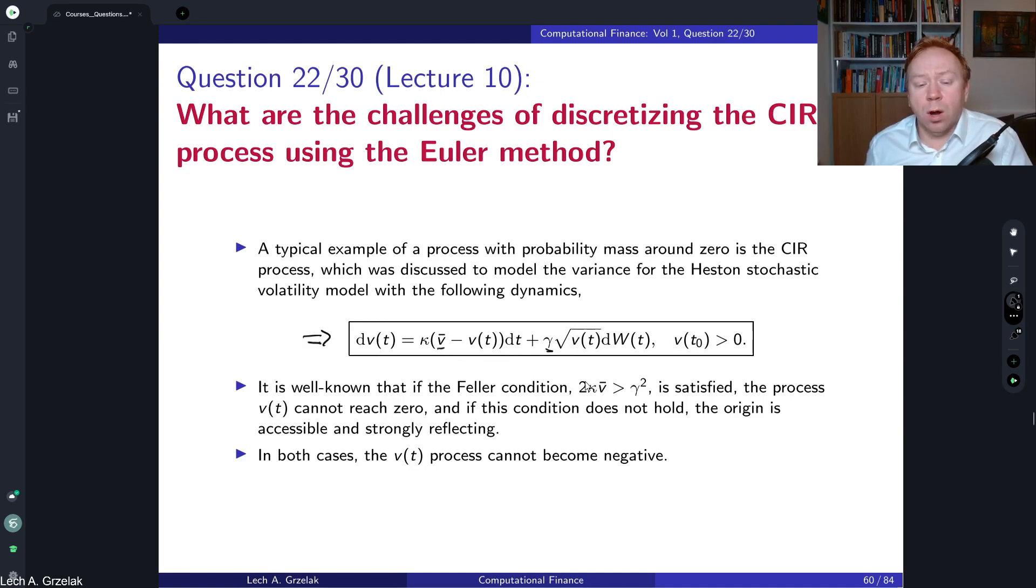What is also well known is the so-called Feller condition. This condition states that if we have two times the mean reversion parameter multiplied by the long-term mean, this has to be greater than squared volatility of volatility. If this condition is satisfied, then we know that the paths or the distribution will stay away from zero. If this condition is not satisfied, then there will be accumulation of the probability mass around zero.